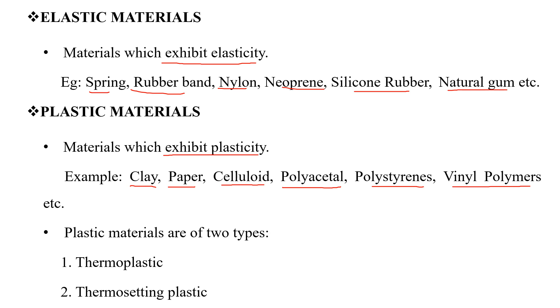Plastic materials are two types. First one is thermoplastic. Second one is thermosetting plastic.